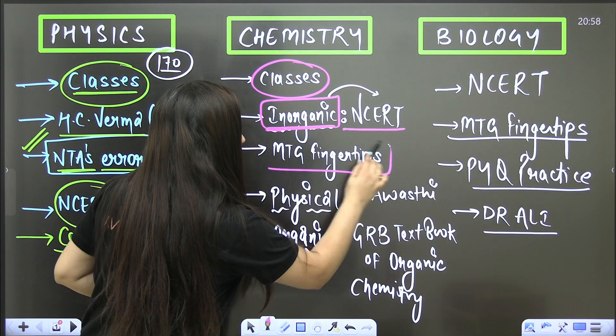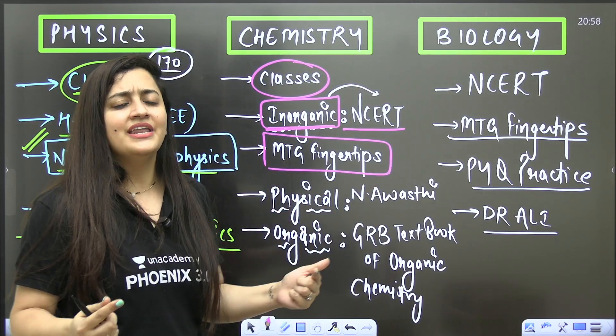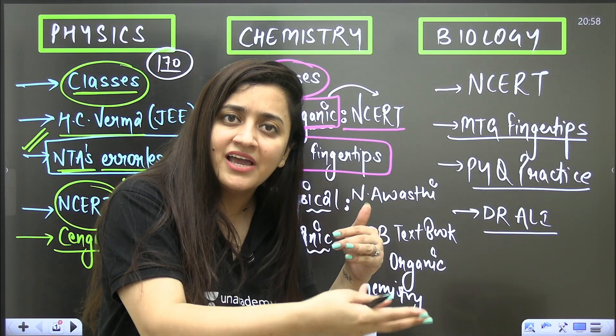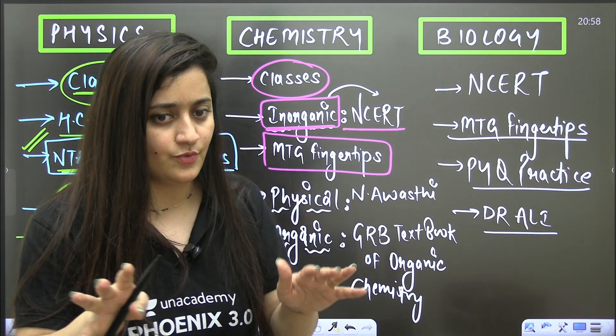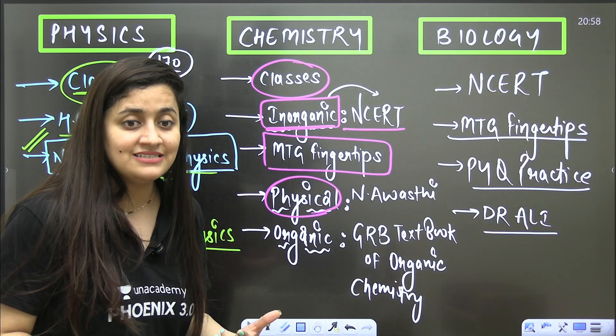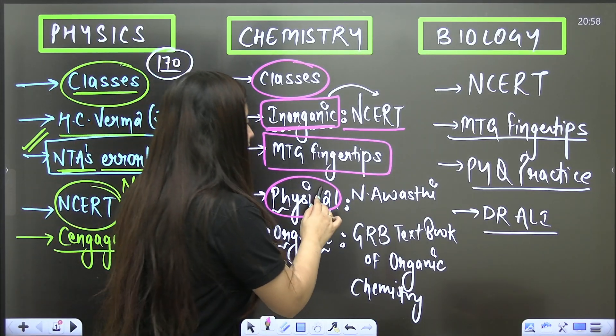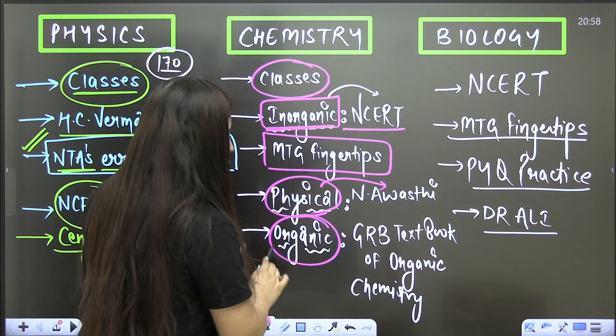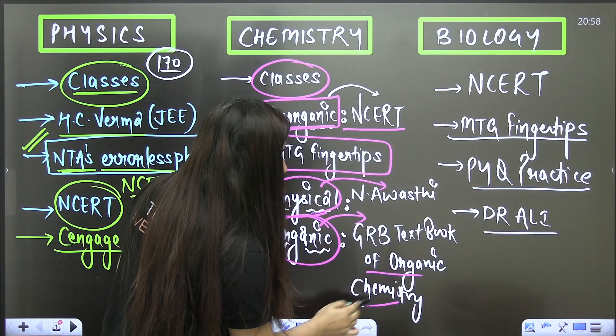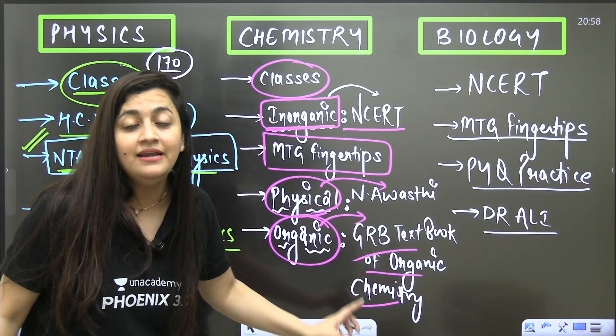MTG Fingertips for chemistry is very good for solving the questions. It will include PYQs also and it is having the NCERT-based questions. Then for the physical chemistry, because here you need to practice the questions, you can go for N Avasthi. Then for the organic, GRB Textbook of Organic Chemistry is what you can use for solving the problems.